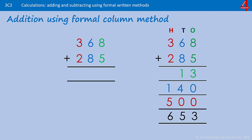8 add 5 is 13 — we put the 3 in and carry the 1. 6 and 8 is 14, add 1 is 15 — put the 5 in and carry the 1. 3 and 2 is 5, add 1 is 6. The answer is 653.